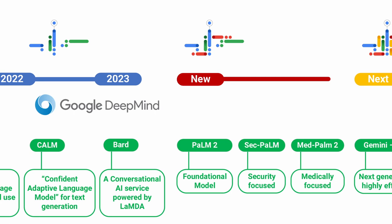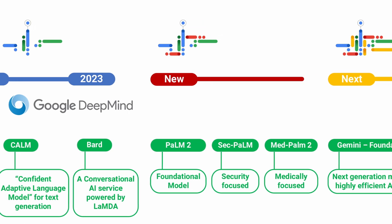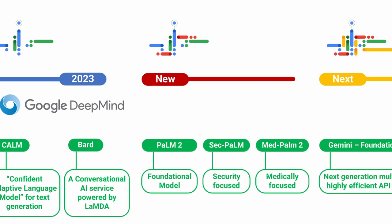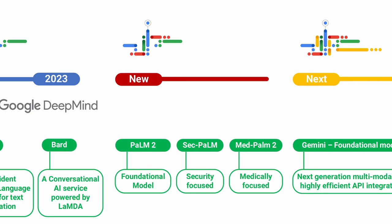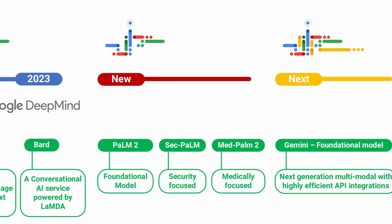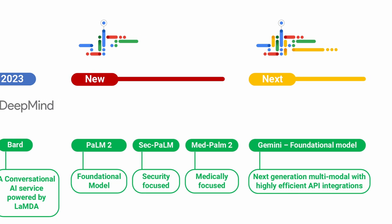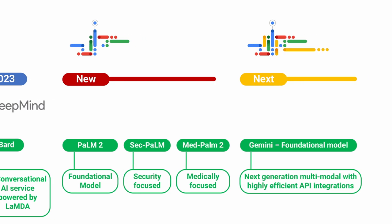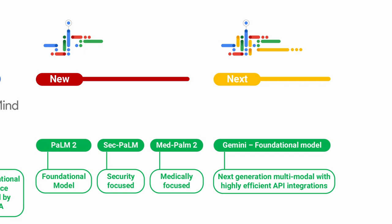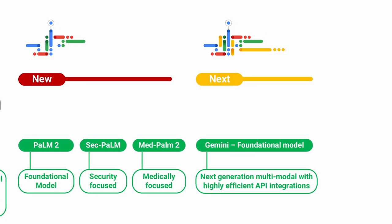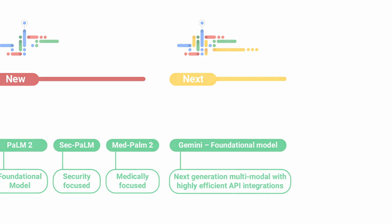Google's new models include PaLM 2, which is a foundational model, as well as SecPaLM, which is security focused, and MedPaLM, which is medically focused. Google's next-generation foundational model is called Gemini. It is multimodal with highly efficient API integrations and is currently still in training.